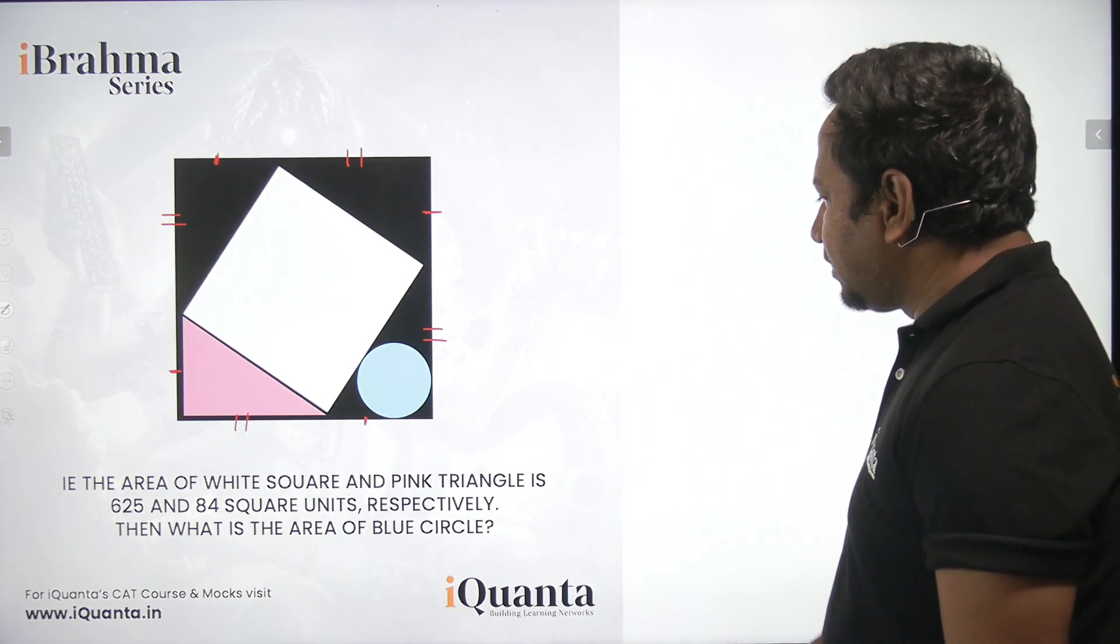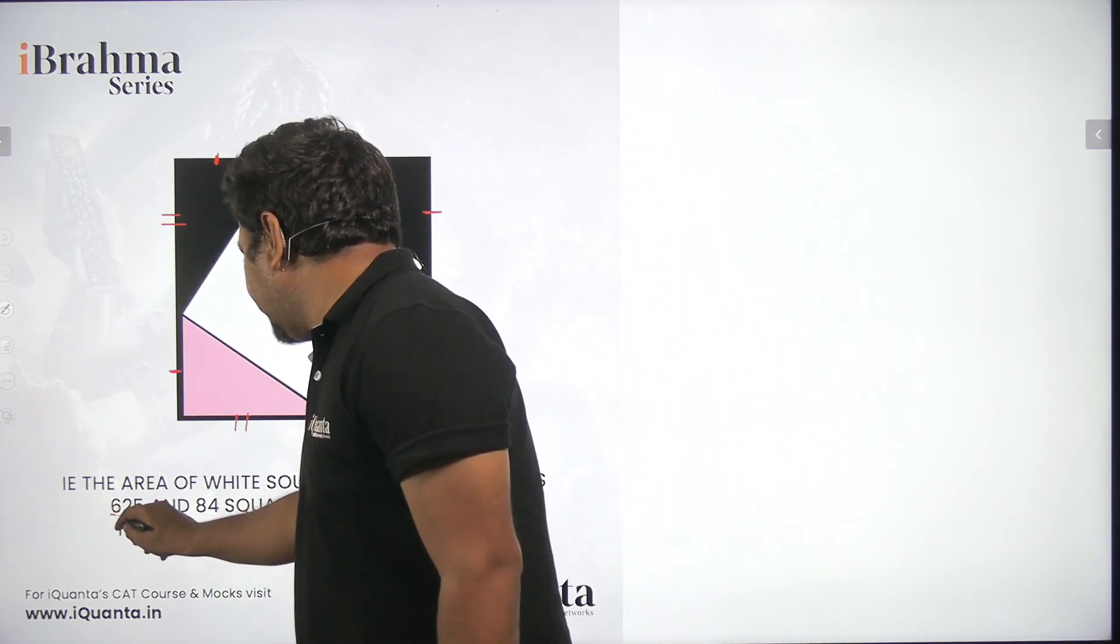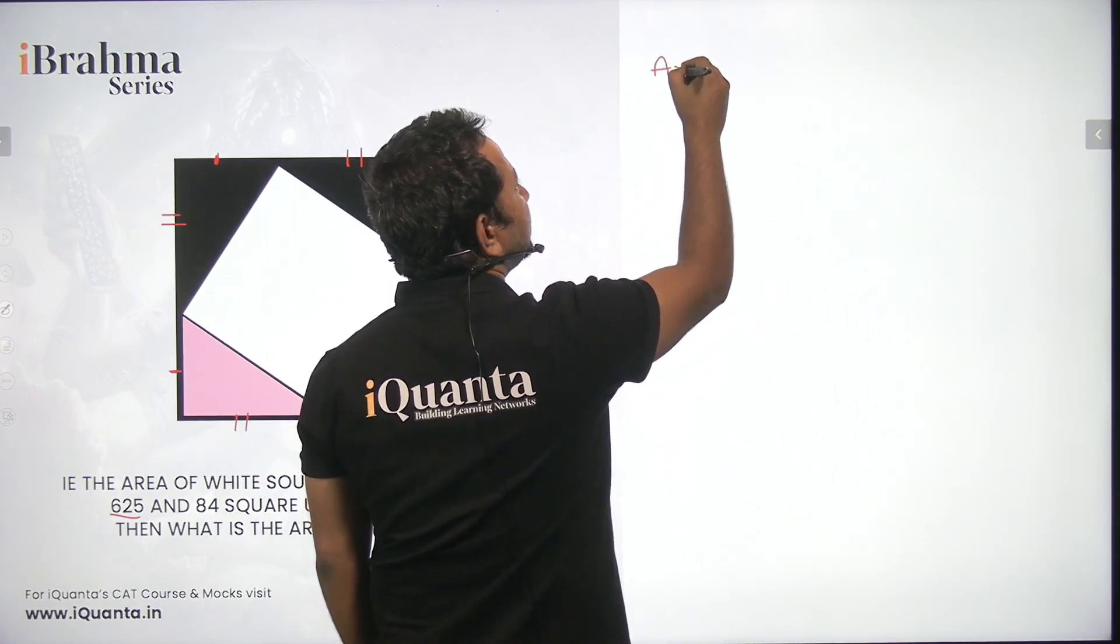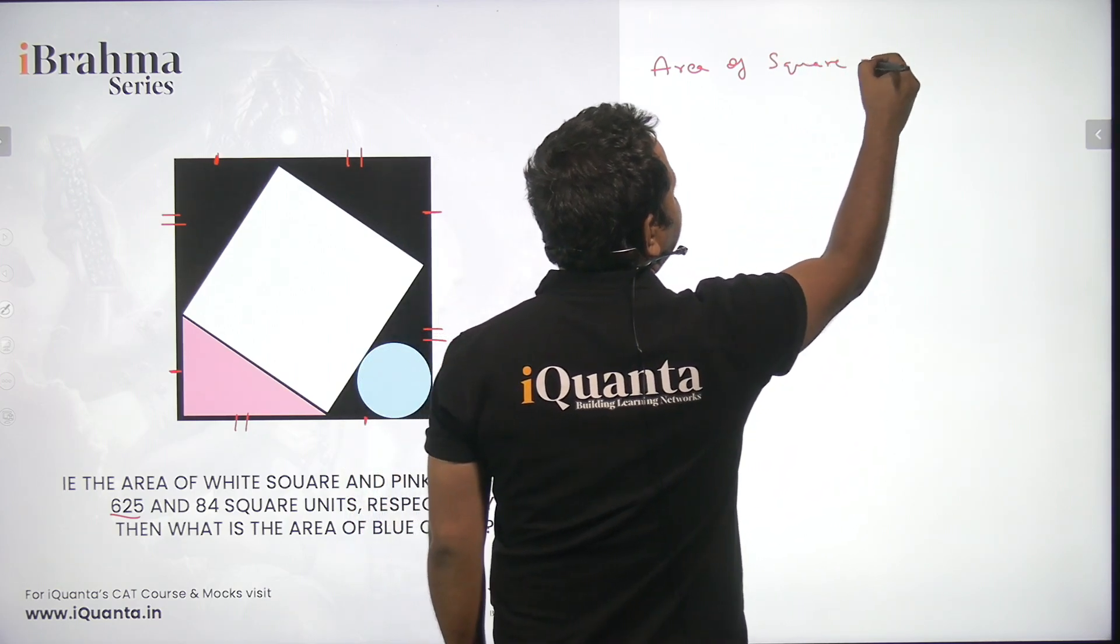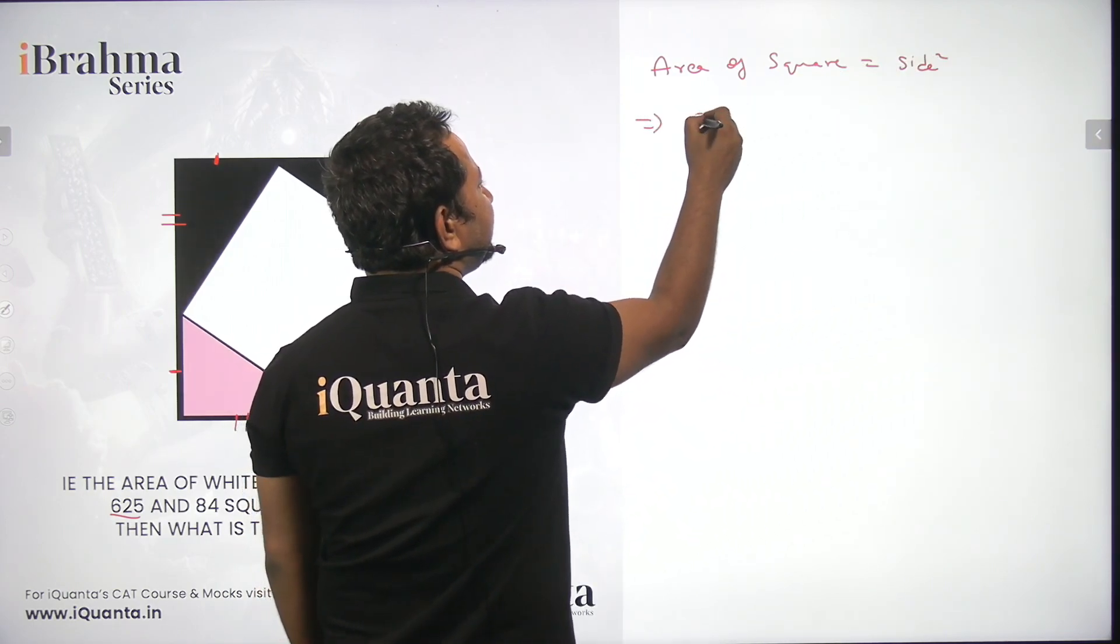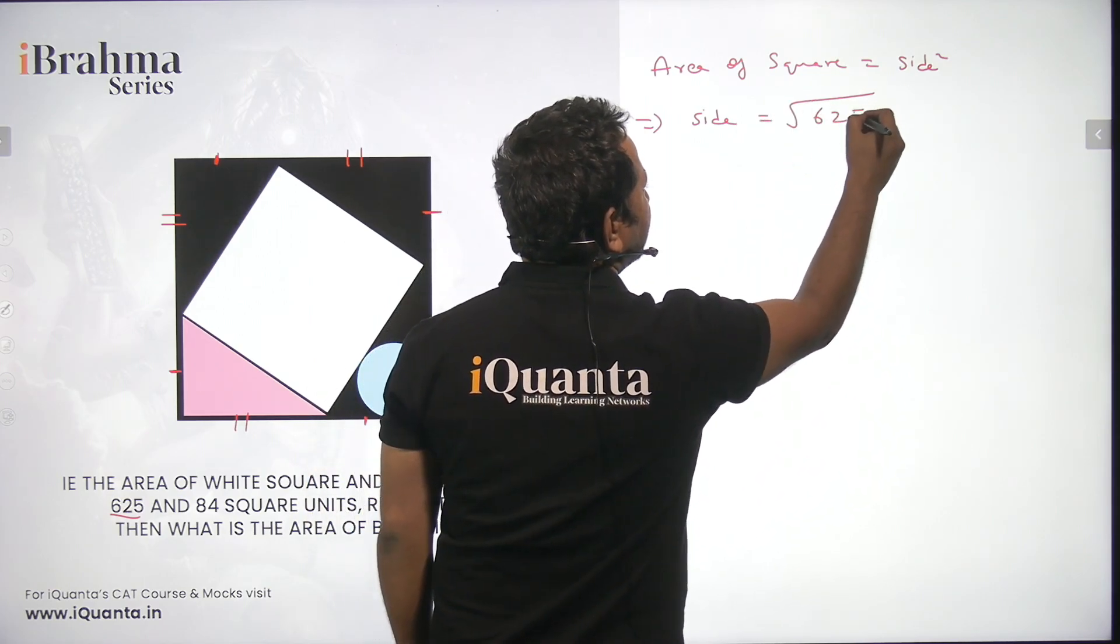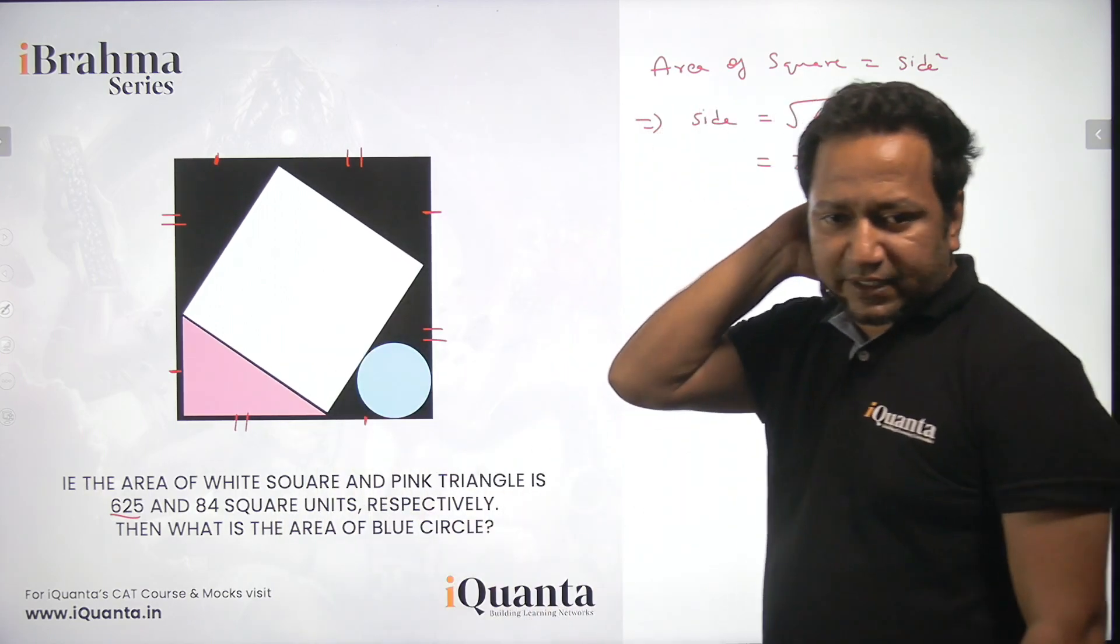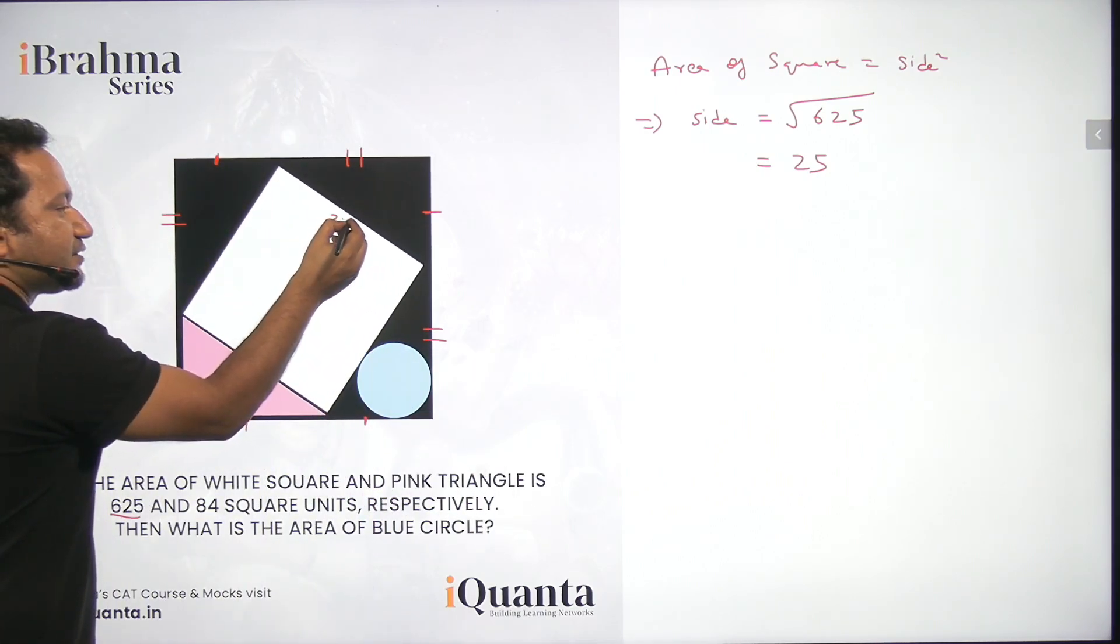First of all, the easiest part. We'll start with the area of square given as 625 square units. As all of us know that the area of square is nothing but the square of the length of its side. Because of this information, you can calculate the side of the white square and that will be equal to square root of 625 or simply 25 units. So this part was very simple. Now let me mark the sides as 25 of this white square.